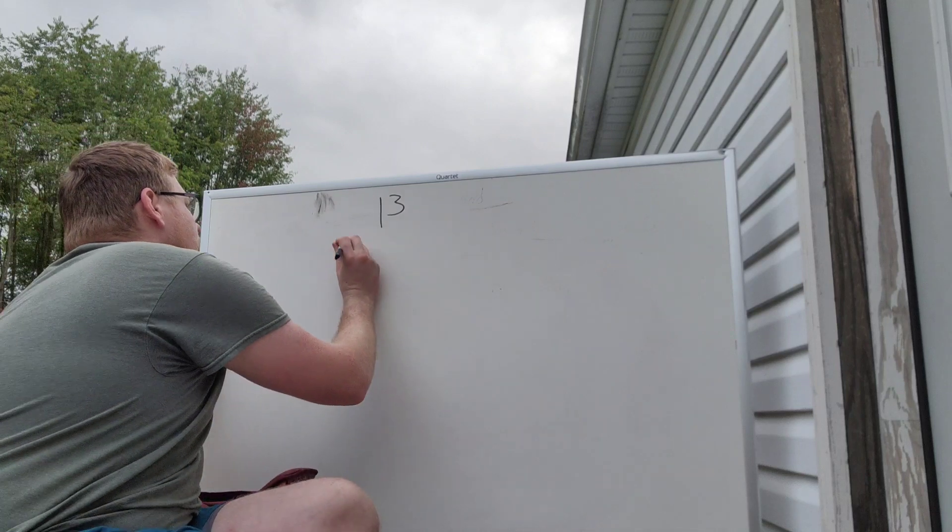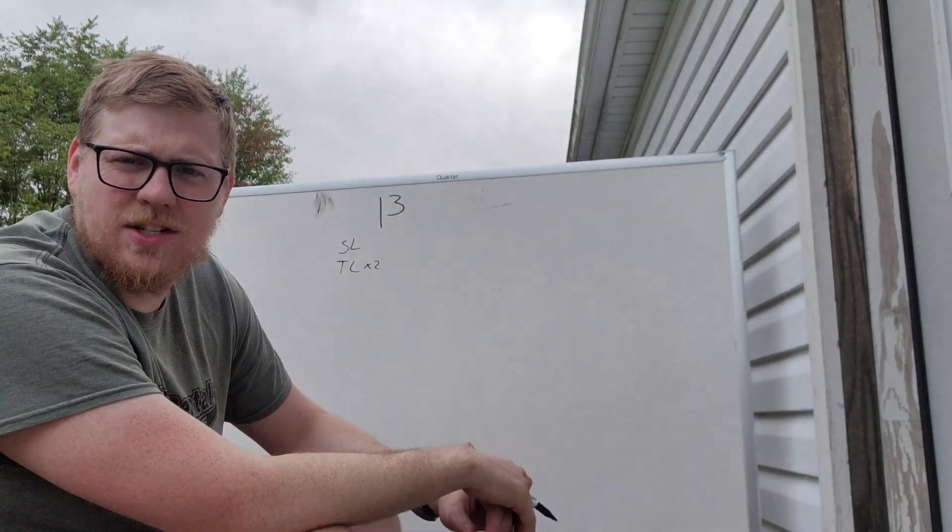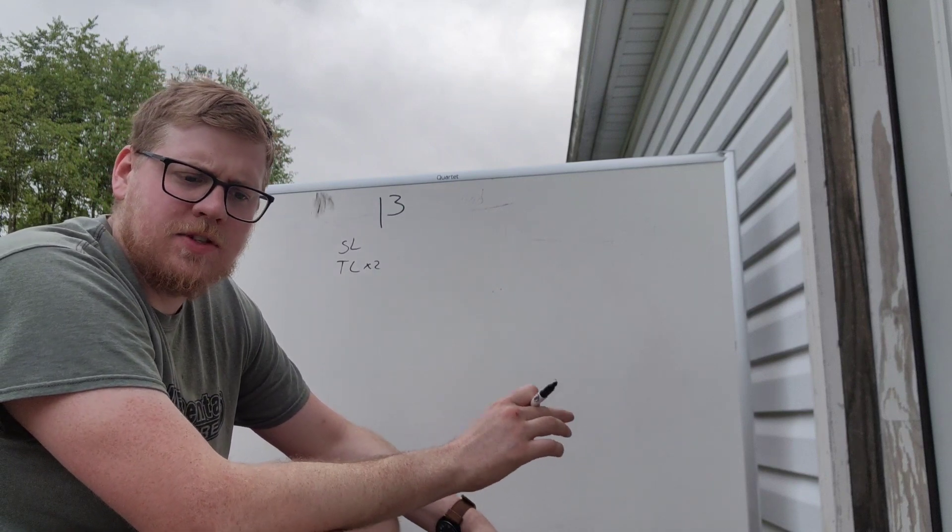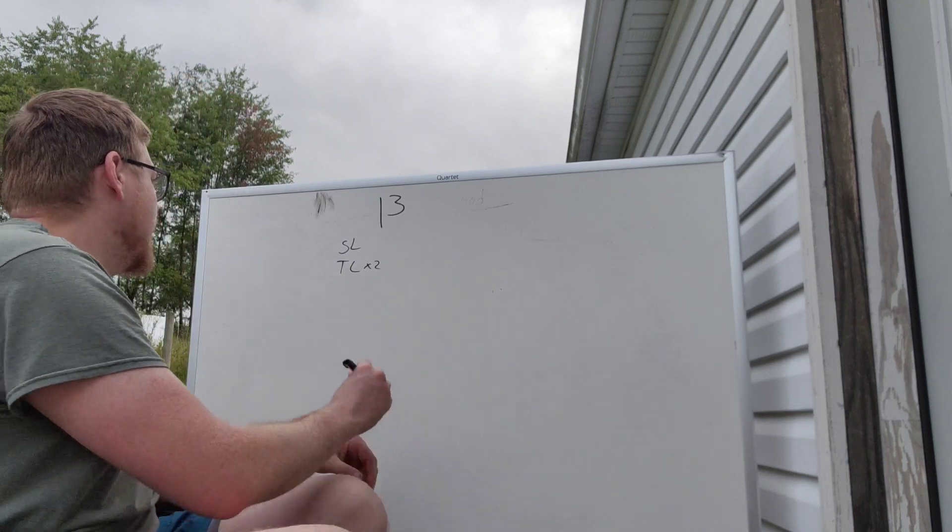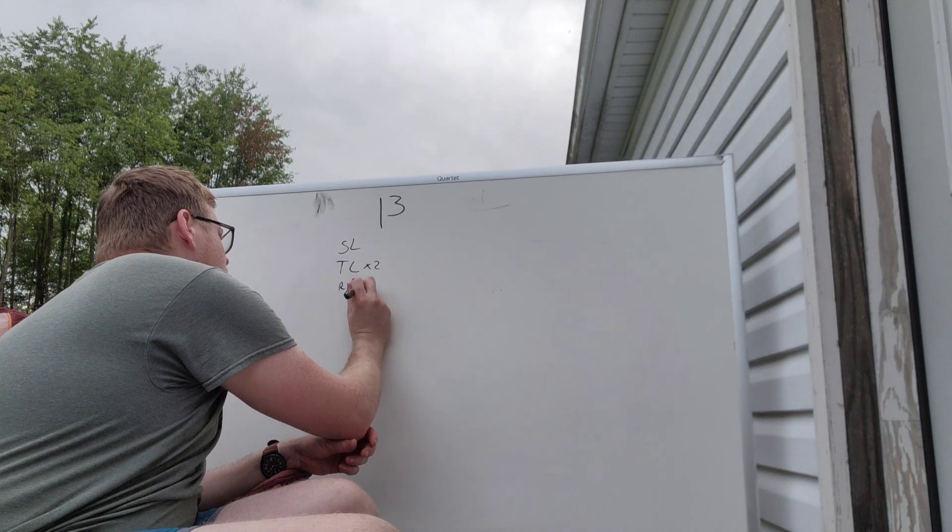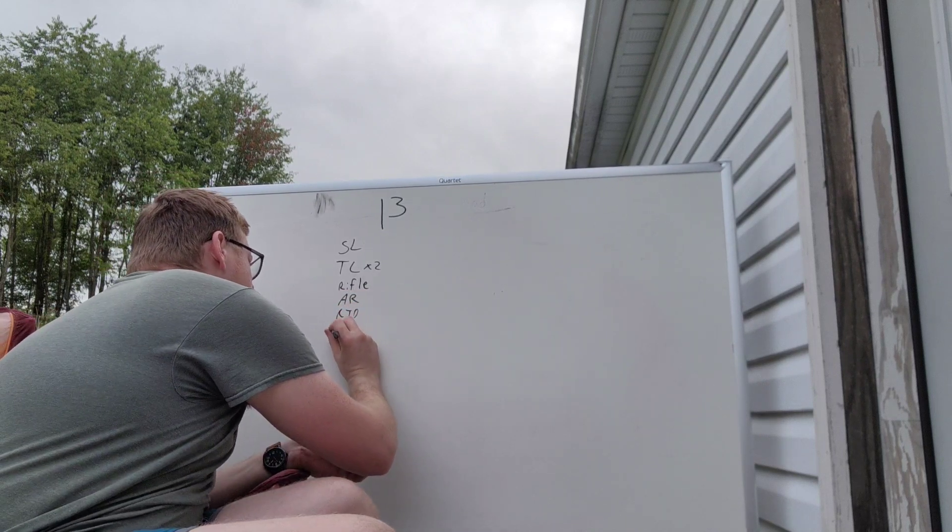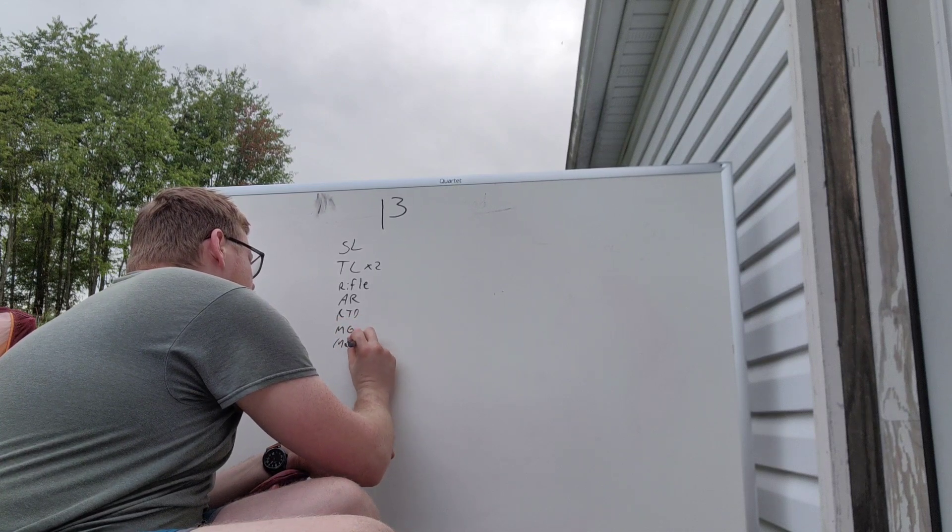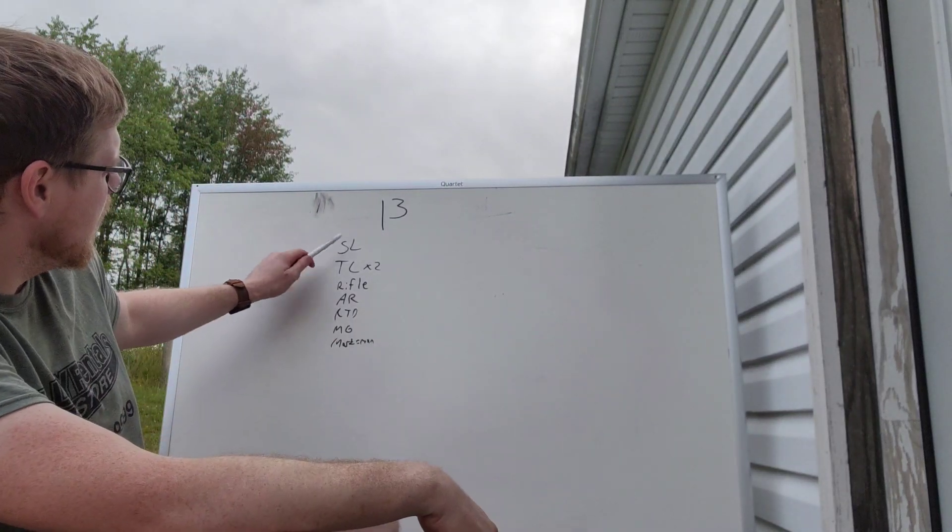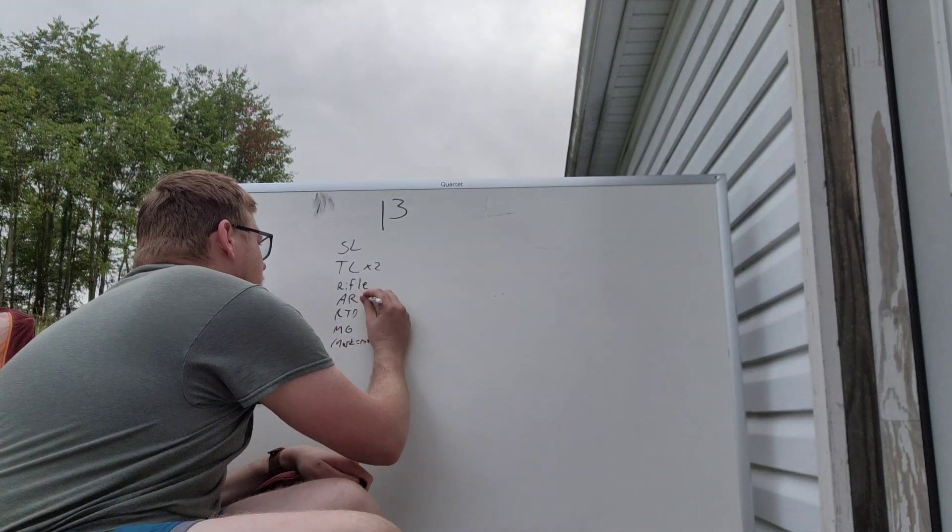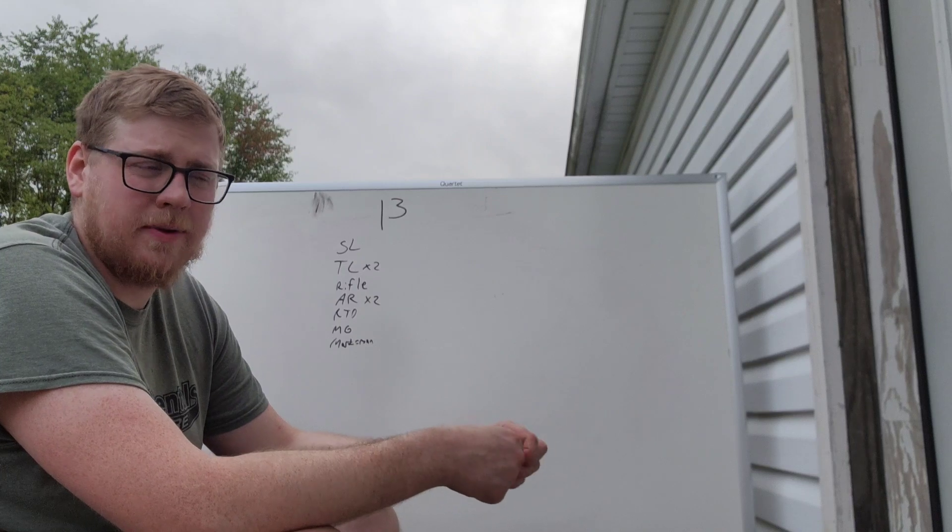So what are the positions? We have squad leader, team leader times two, or one team leader, one assistant squad leader. The difference is an assistant squad leader needs to be significantly more proficient than a team leader. His job is to assist the squad leader. Then you have rifleman, auto rifleman, RTO, MG, marksman. Now these are all the different positions.